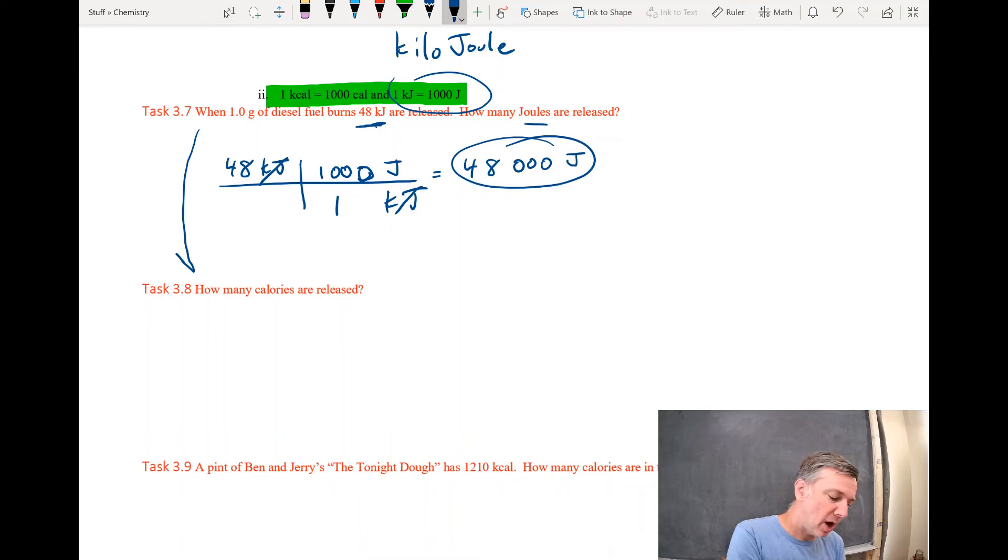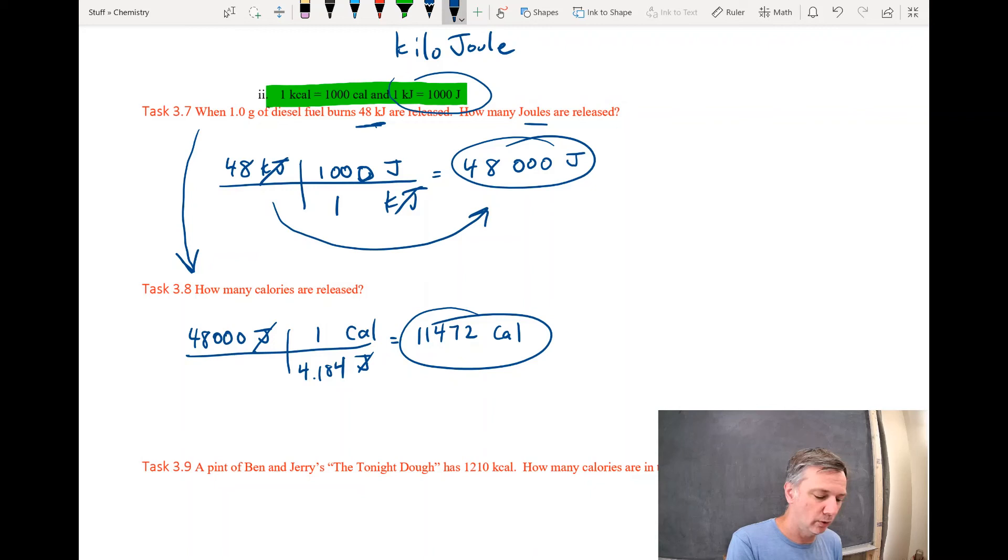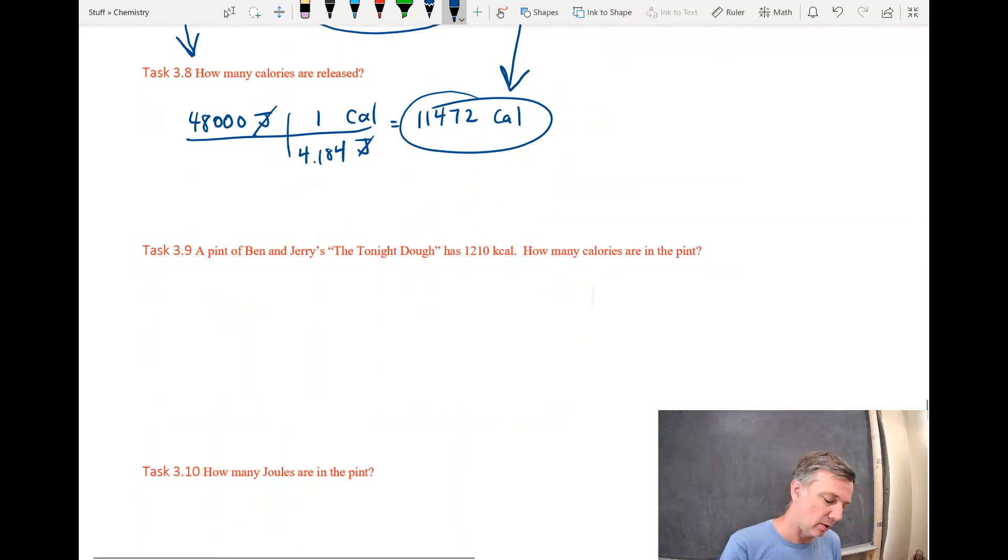Now, building off of that, so we're still talking about task 3.7, how many calories are released? So we're going to convert from joules to calories. So I've got 48,000 joules, and I want to convert that to calories. I'm going to use a T-chart because I'm doing a conversion. So joules on top, joules on bottom. That cancels out, and I want to replace that with calories. So I've been using that for every one calorie, there are 4.184 joules. This is going to be 48,000 divided by 4.184. So I get a value of 11,472 calories. So there, I converted from kilojoules to joules, and then from joules to calories. Let's try another one.